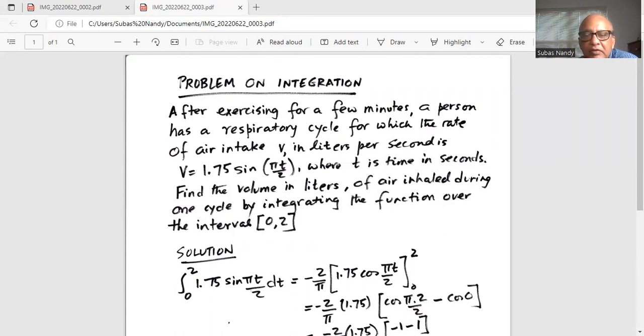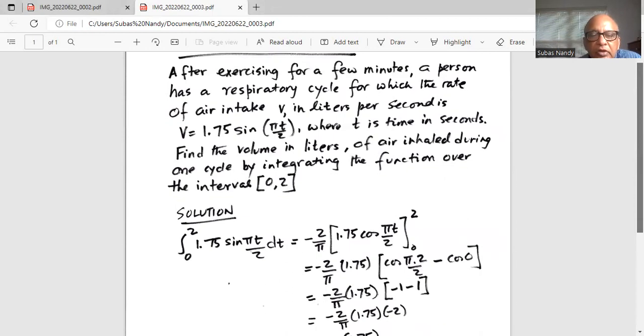That means how much volume of air is taken from 0 to 2 seconds. So that's one cycle. We integrate from 0 to 2, 1.75 sine pi t over 2 dt.